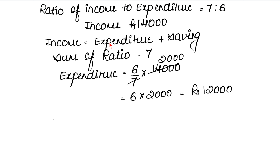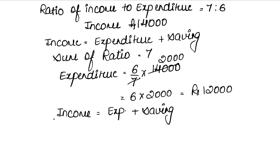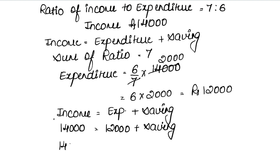Income equals expenditure plus saving. Our income is 14,000 and our expenditure is 12,000 plus saving. So saving equals 14,000 minus 12,000. Our saving came out to be rupees 2,000.